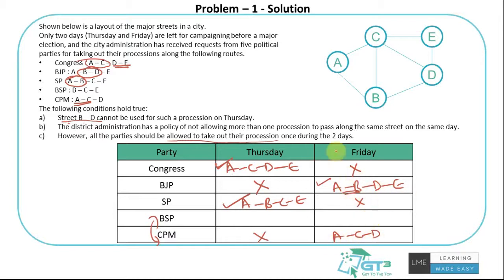No clash as of now. Let's come to BSP. BSP needs BC and CE. BC and CE is already taken by SP on this day, so they have to do it only on Friday. Is there any clash? No. BJP needs streets AB, BD, and DE, which is not required by BSP. BCE is not required by CPM. So no issues with that.